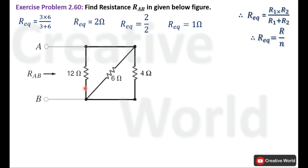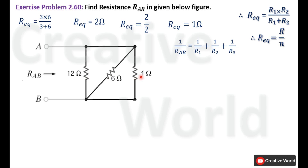Now these three resistances are in a parallel connection and we need to find their equivalent resistance, which will equal RAB. Since the number of resistances is more than two, we use the formula: 1 divided by RAB equals 1 divided by R1 plus 1 divided by R2 plus 1 divided by R3. R1 is 12 ohm, R2 is 6 ohm, and R3 is 4 ohm. Placing values: 1/RAB equals 1/12 plus 1/6 plus 1/4.